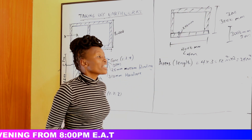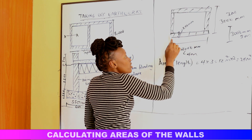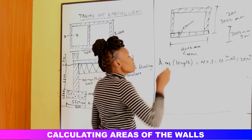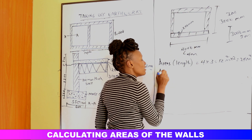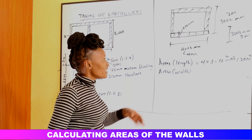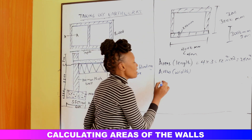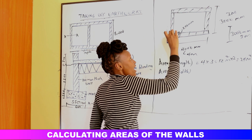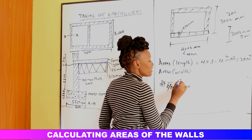Then we calculate the areas for the width walls. We separate the long walls and short walls to avoid repeating the corner areas. The wall on the width side starts from the inner face of one long wall to the inner face of the other. The external dimension is 3000 mm, and we deduct two wall thicknesses of 200 mm each, giving 400 mm total deduction.